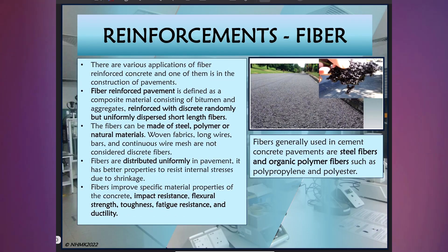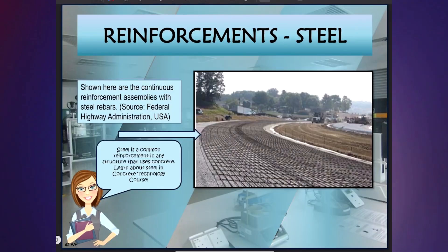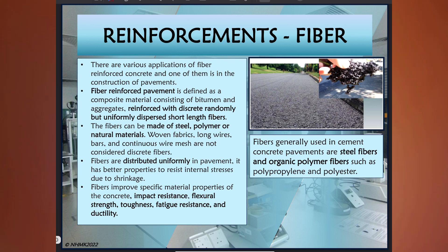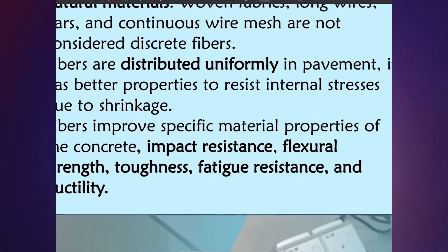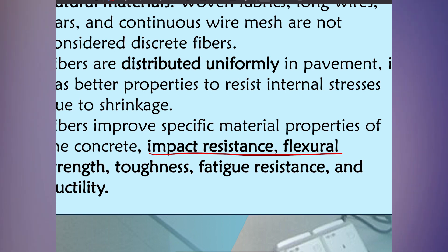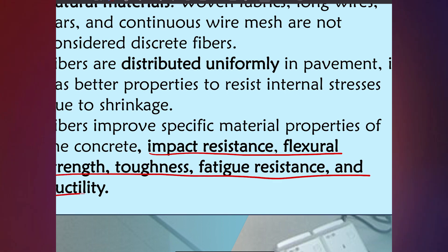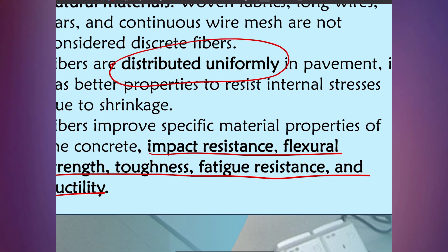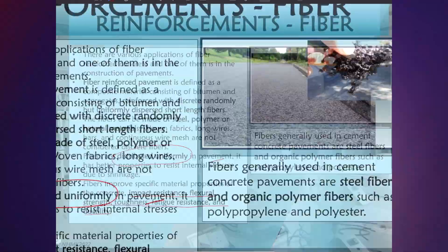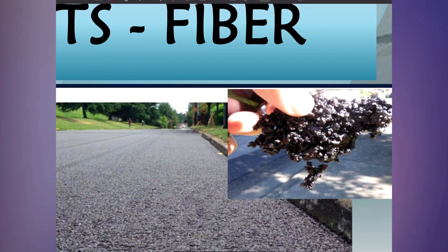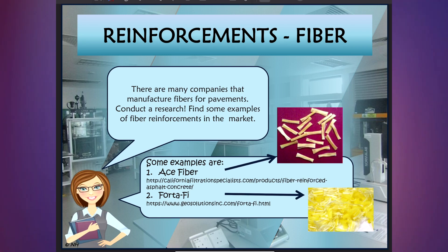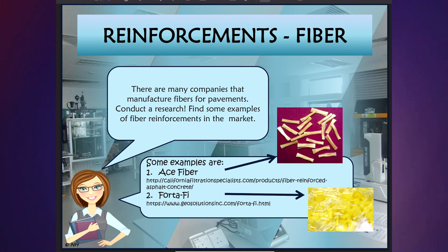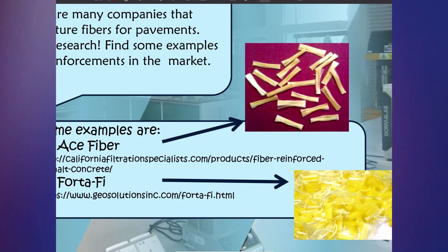And then we have fibre reinforcements. Steel is usually used in rigid pavement and fibres usually in flexible pavement. It is generally used in semi-concrete pavements — steel fibres and organic polymer fibres such as polypropylene and polyester. Fibres improve specific material properties of concrete: impact resistance, flexural strength, toughness, fatigue resistance and ductility. They are also distributed uniformly in a pavement mixture. There are many companies that manufacture fibres for pavements. Examples in the market include ACE fibre and Forza fibre.